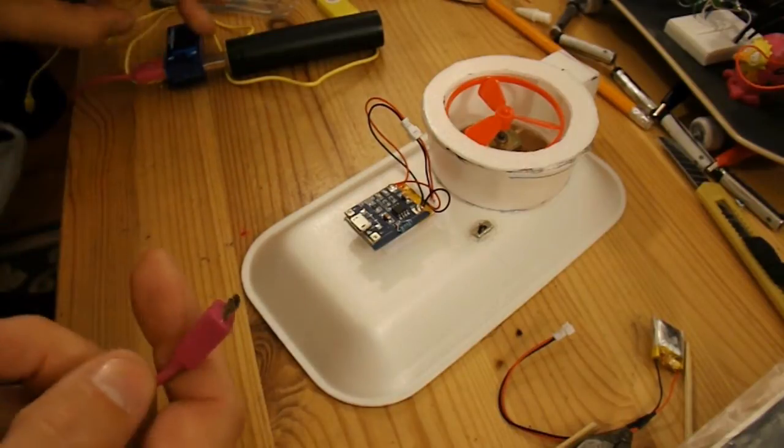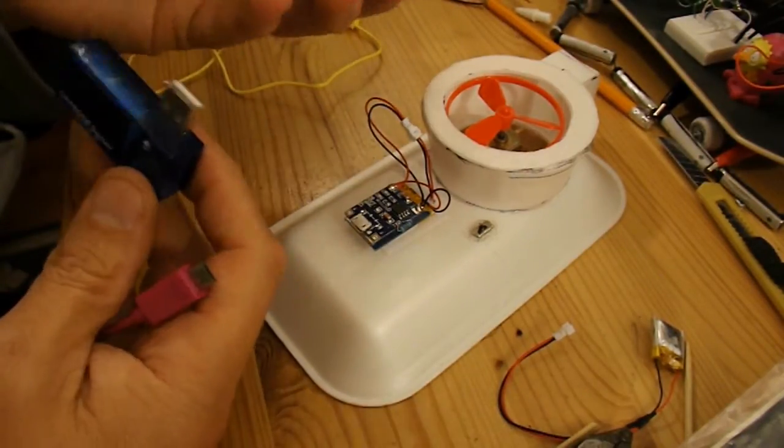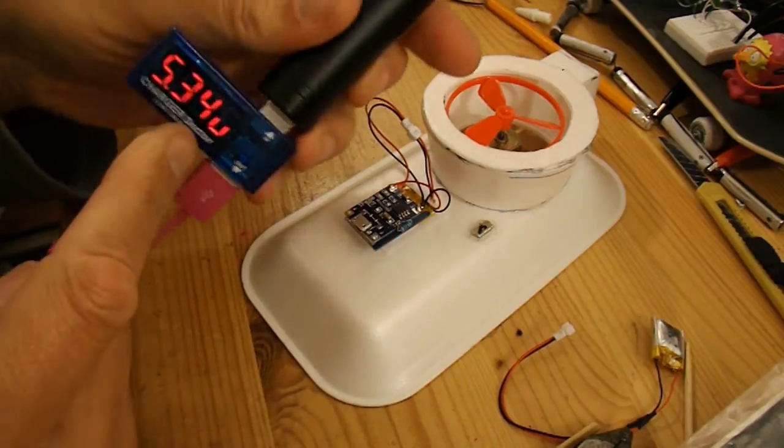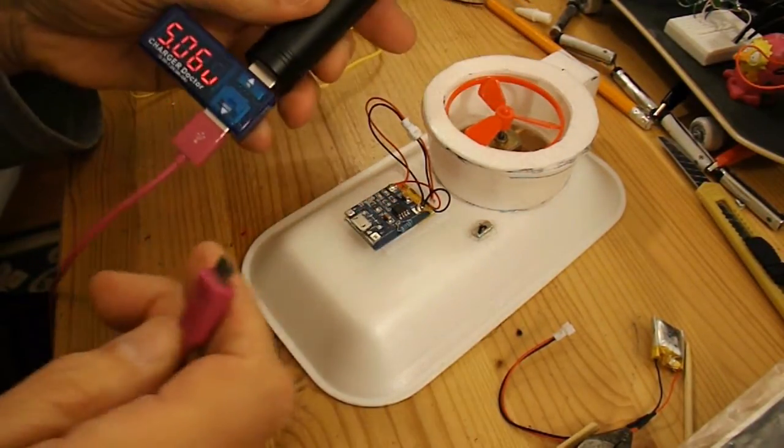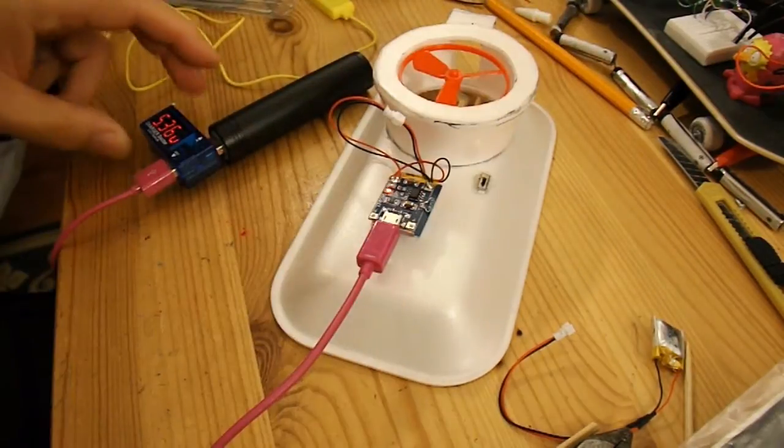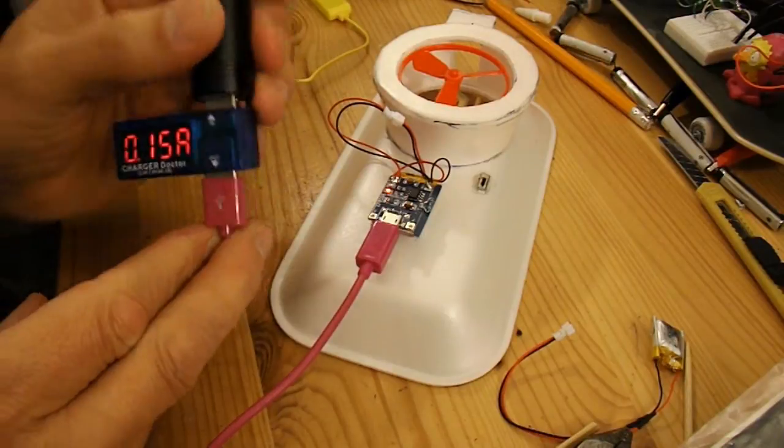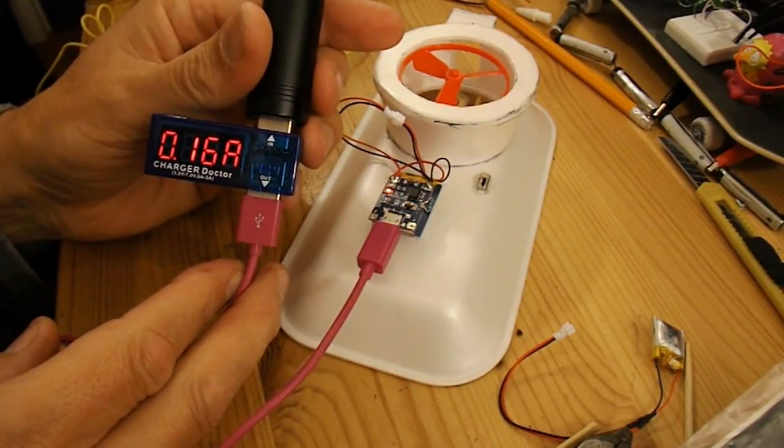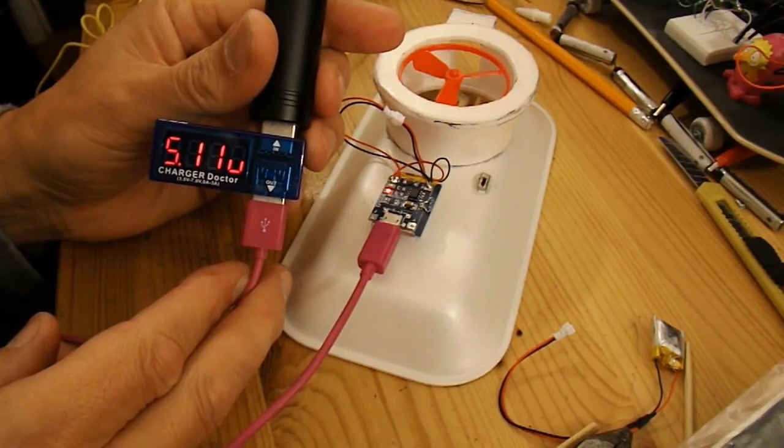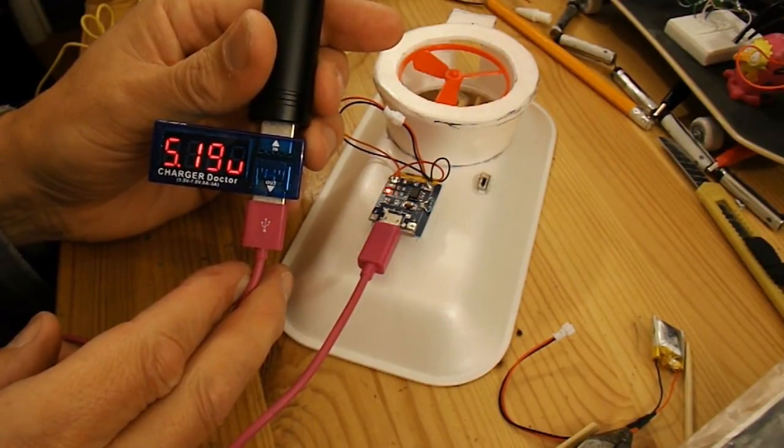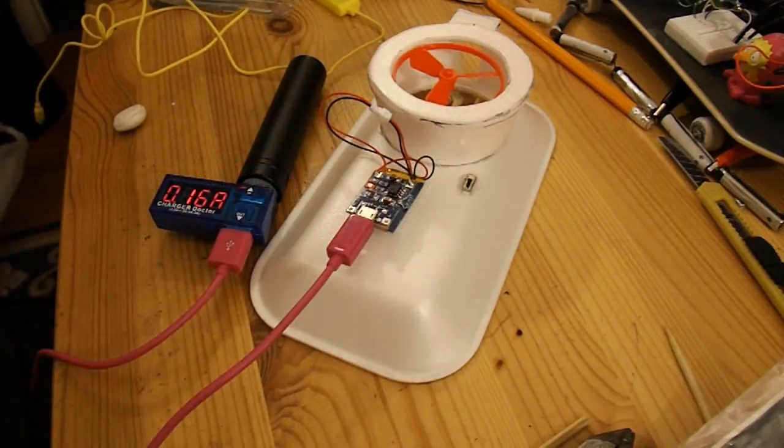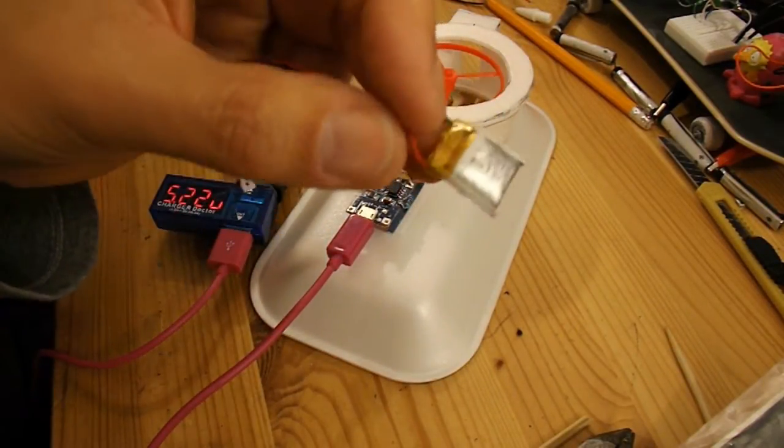But before we do that I'll just have a look at the actual charging circuit. So again I've got my portable charger here. I've also got a charger doctor so we can look at what sort of amps, milliamps we're putting into the charger. You can read that as well as I can. And the little red LED is on indicating that it's charging.